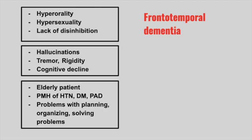Next is a patient who has hallucinations, tremor, and rigidity, followed by cognitive decline. This is Lewy body dementia. You want to differentiate this from Parkinsonism. In Lewy body dementia the hallucinations happen first and then you have the Parkinsonian signs, versus in Parkinson's disease you have more of the tremor and rigidity first, followed by the hallucinations.